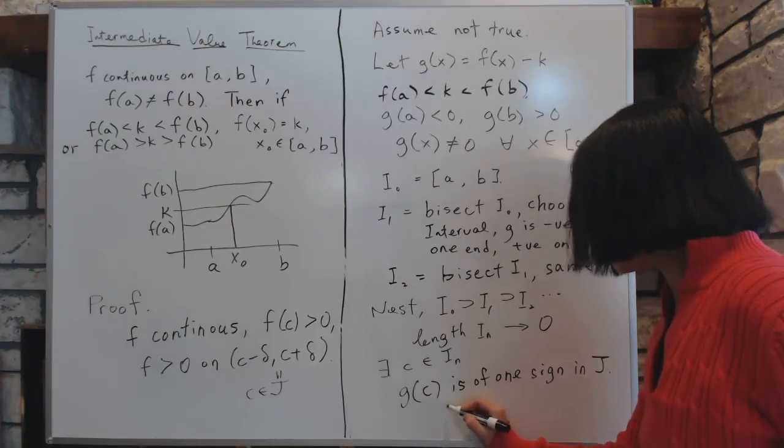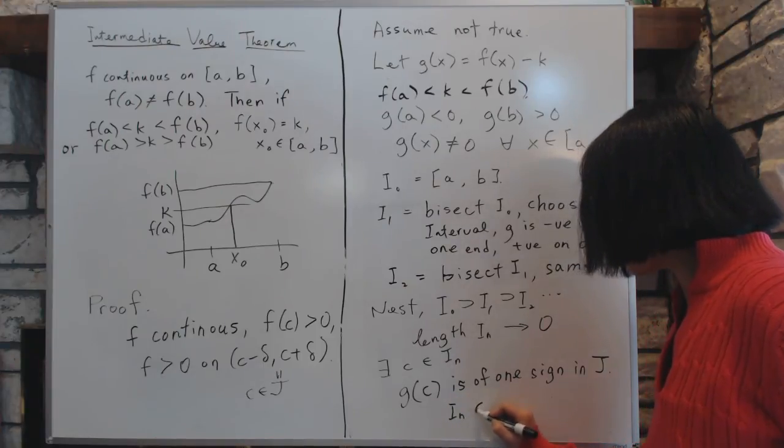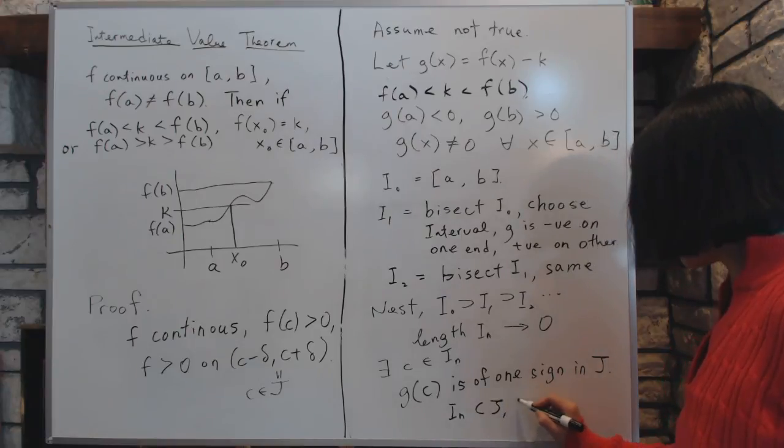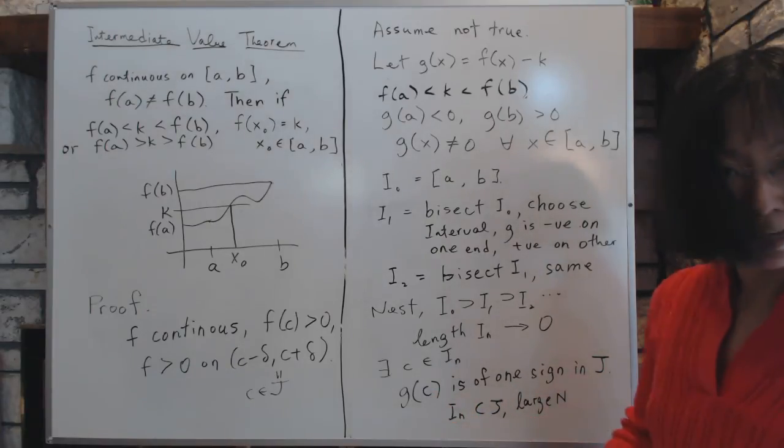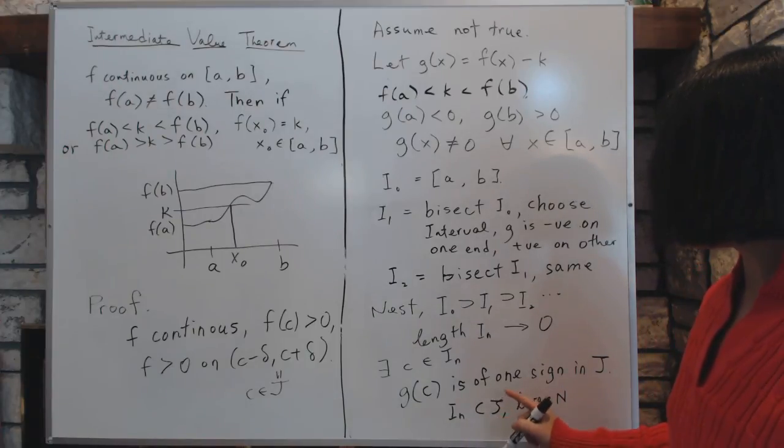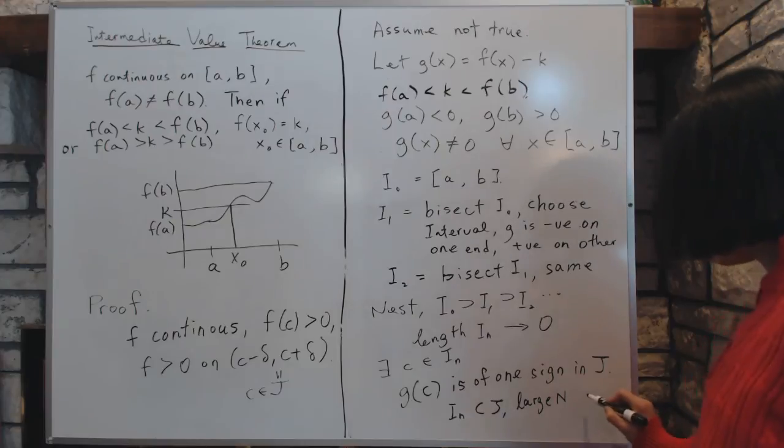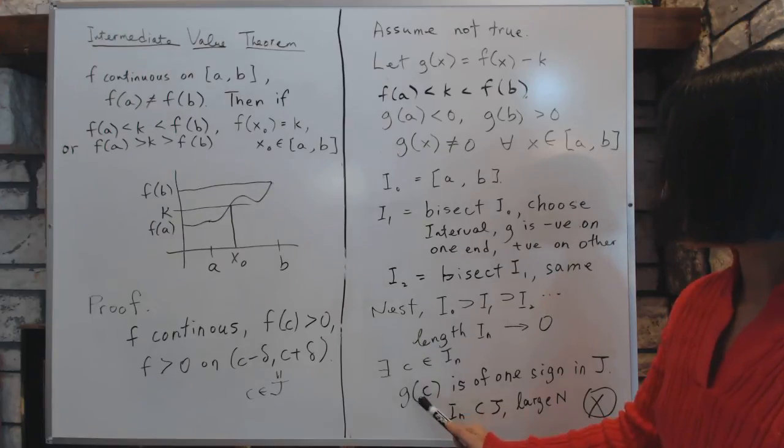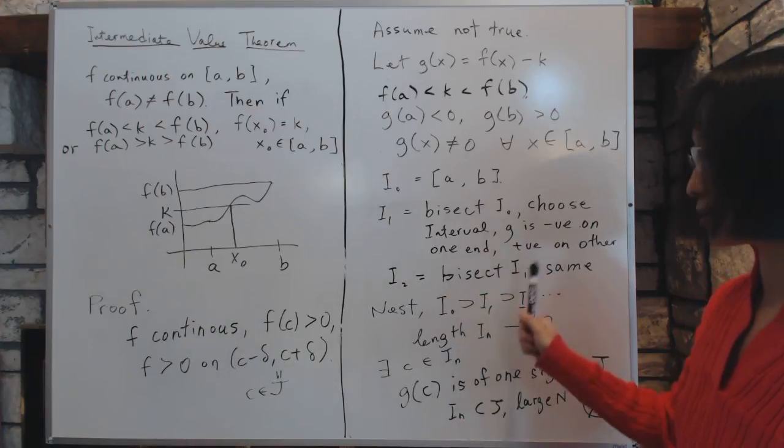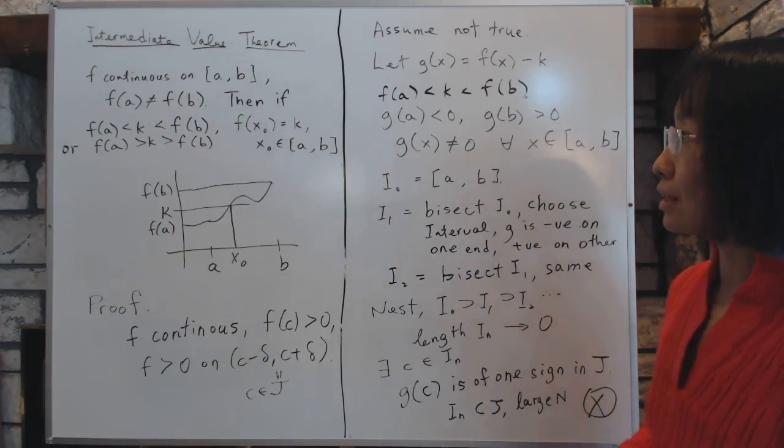But, but J also contains i_n. i_n is going to belong to J for some large n. Because C is inside J, and C belongs to all the intervals i_n. So, then, that would mean that G of C is of different signs. So, that will arrive at our contradiction, and that concludes our proof. So, you're tracking this oddity, and then show that this, at this point, as this, there's a tiny little interval where G of C has to be the same sign, and yet, G of C also contains i_n, which means G of C has to be of opposite signs, and that is your contradiction. So, that's the end of our proof.